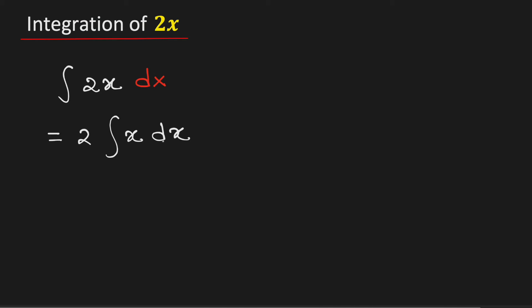Now to find this integral we will use the power rule of integration. Using this power rule of integration, this will be equal to 2 times x to the 1 plus 1 divided by 1 plus 1 plus integration constant c.